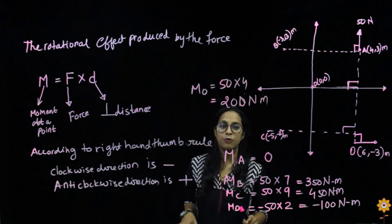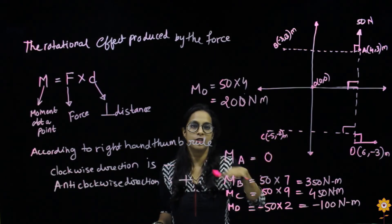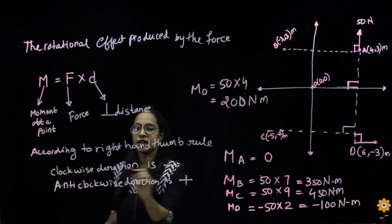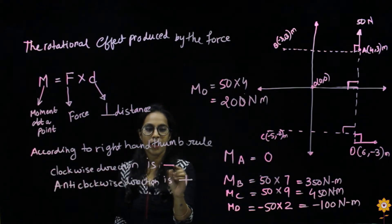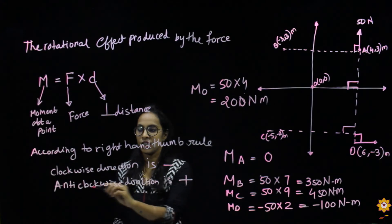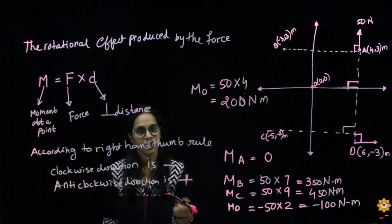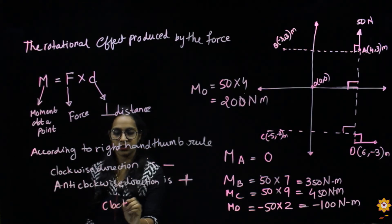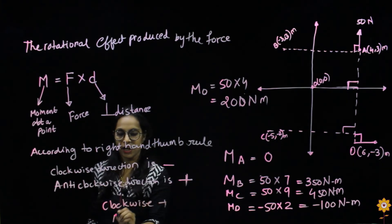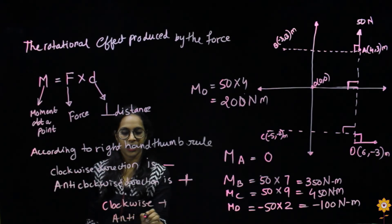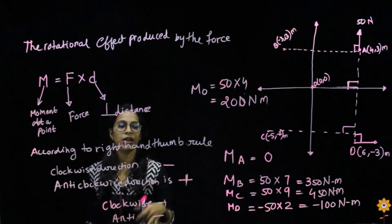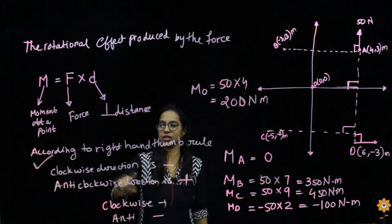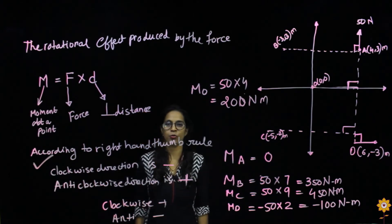So this is how we find the moment of a force about any point. Here I have used the direction according to the right-hand thumb rule — that is, minus for clockwise and plus for anticlockwise. You can also take it the other way — clockwise positive and anticlockwise negative — it can be either way. I consider clockwise direction to be negative and anticlockwise direction to be positive.